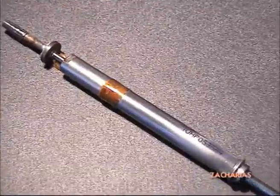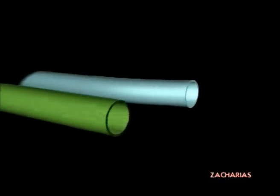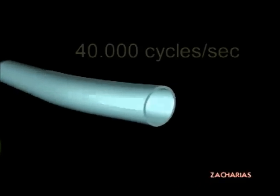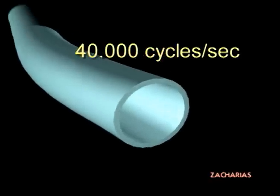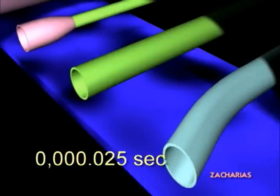The output of a FACO handpiece is a sinusoidal axial displacement transmitted to the tip of the FACO needle. At a typical oscillating frequency of 40,000 cycles per second, each full cycle of tip motion lasts 25 millionths of a second.